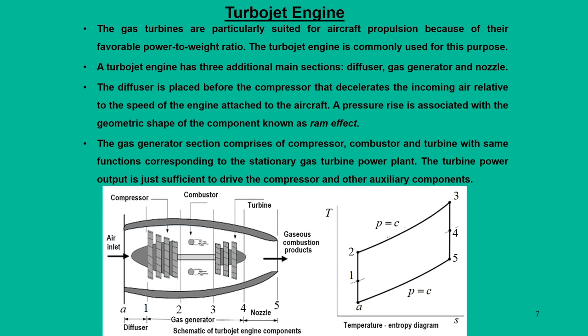One such simplified jet engine is called a turbojet engine. The turbojet engine concept comes from aircraft propulsion cycles, and its main intention starts with gas turbine engines because they favor high power-to-weight ratio. When we say turbojet engines, we can expect higher power at relatively lower weight, without using any heat exchangers or bulky devices. A turbojet engine has three main sections: the diffuser section, the gas generator section, and the nozzle section.